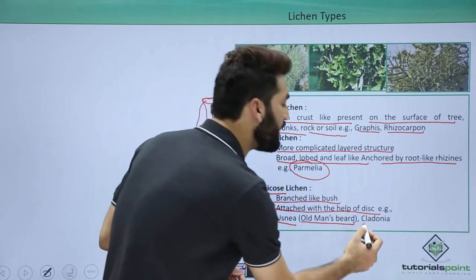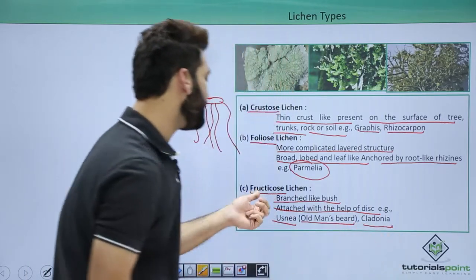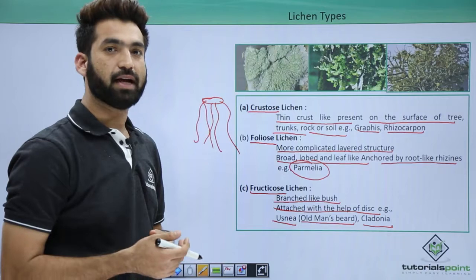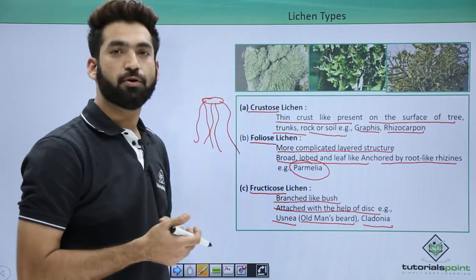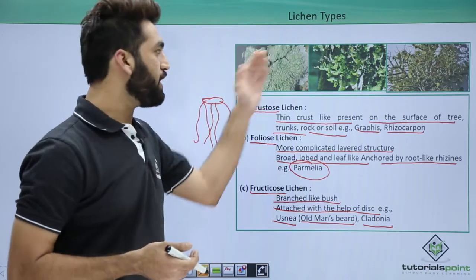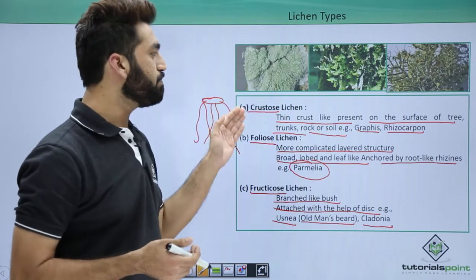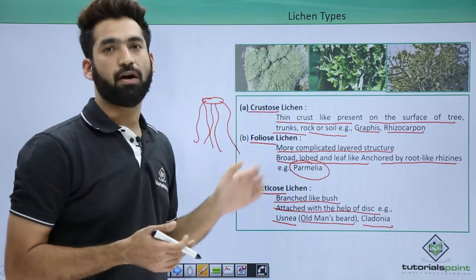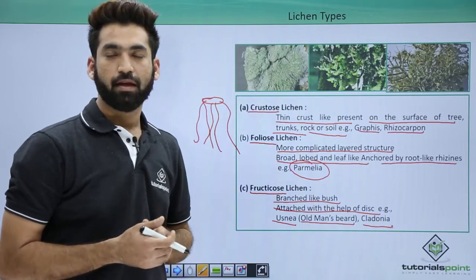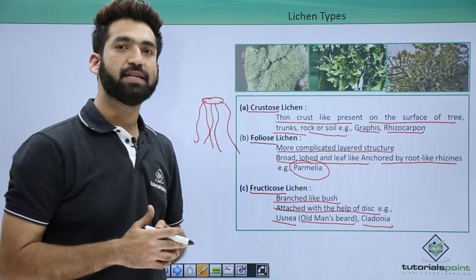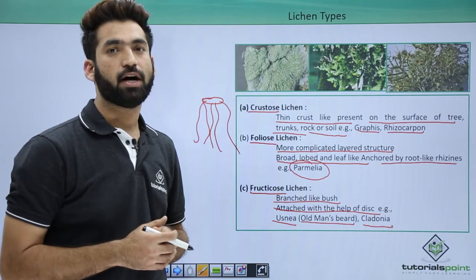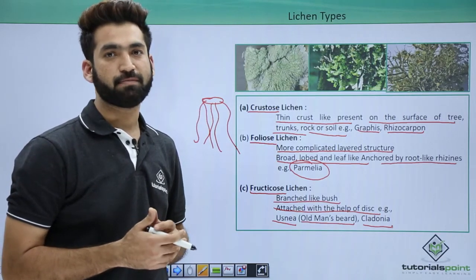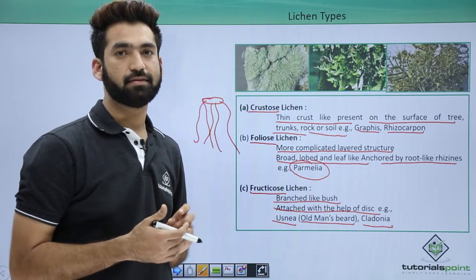The second lichen belonging to the fructicose category is Cladonia. So there are three lichens based upon morphology. In the next session we will be discussing about how reproduction takes place in lichen.